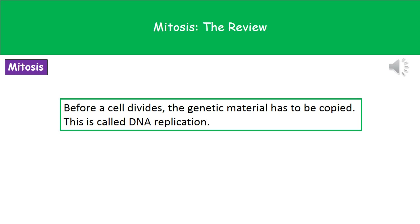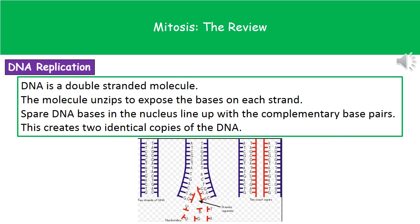The first thing we need to remember is that before a cell can actually divide, we've got to copy that genetic material. That process is called DNA replication. The way that DNA replication actually takes place is quite similar to what we've looked at previously with making proteins.